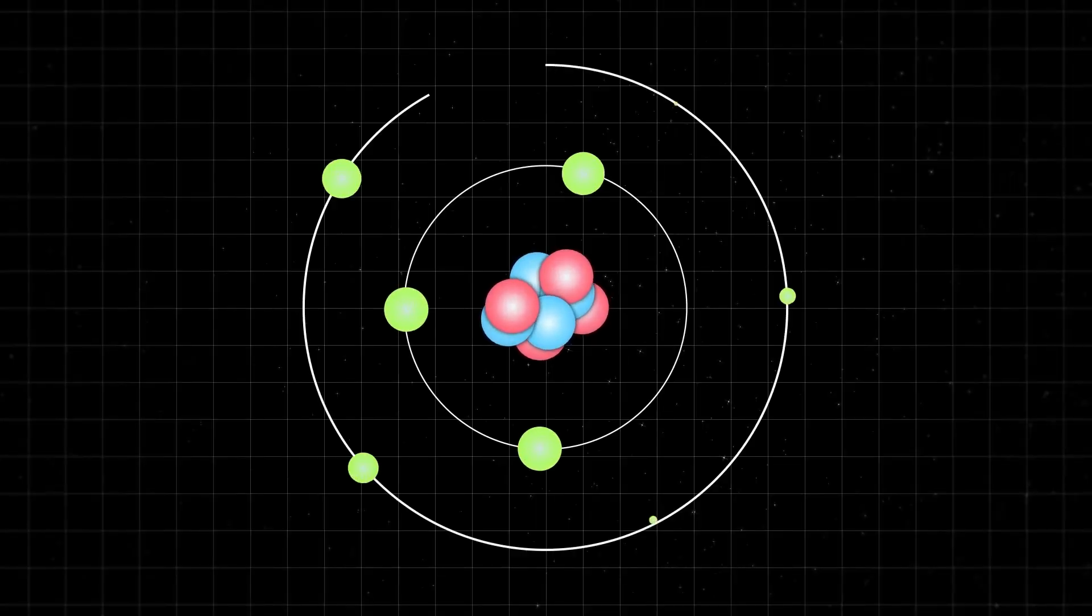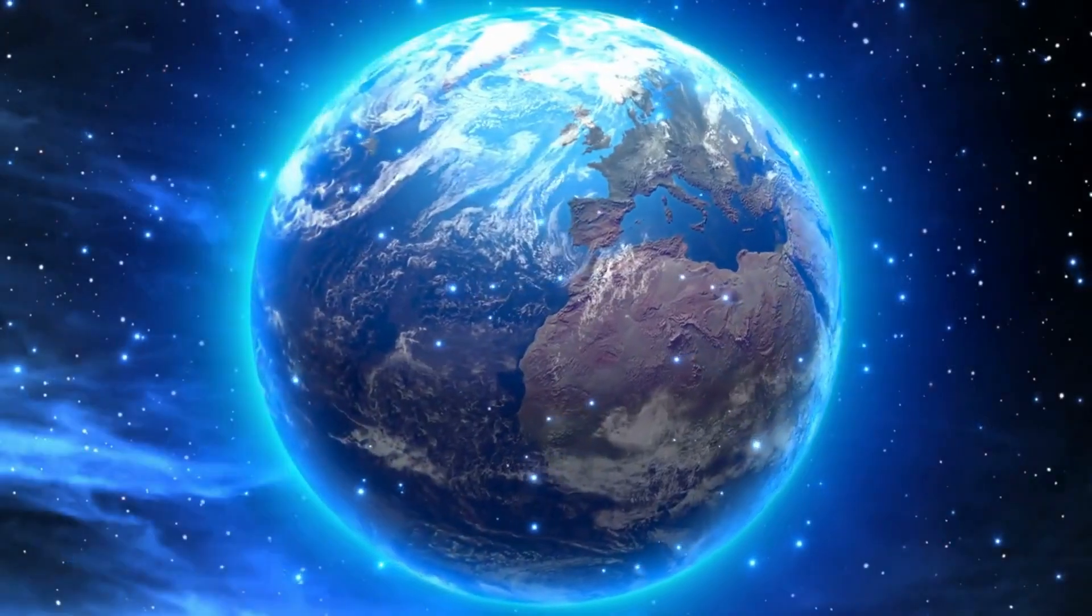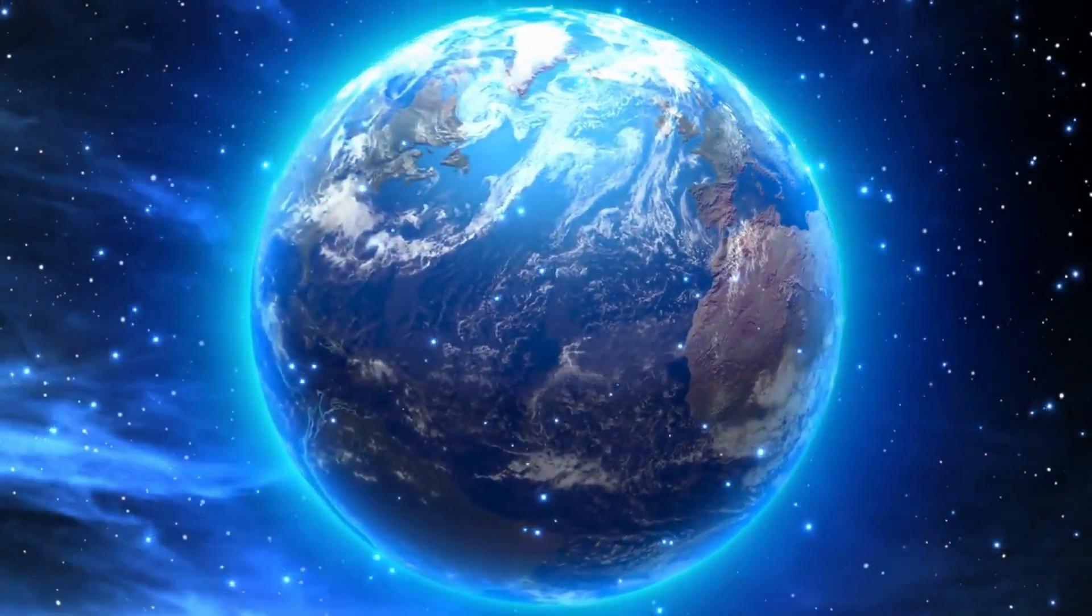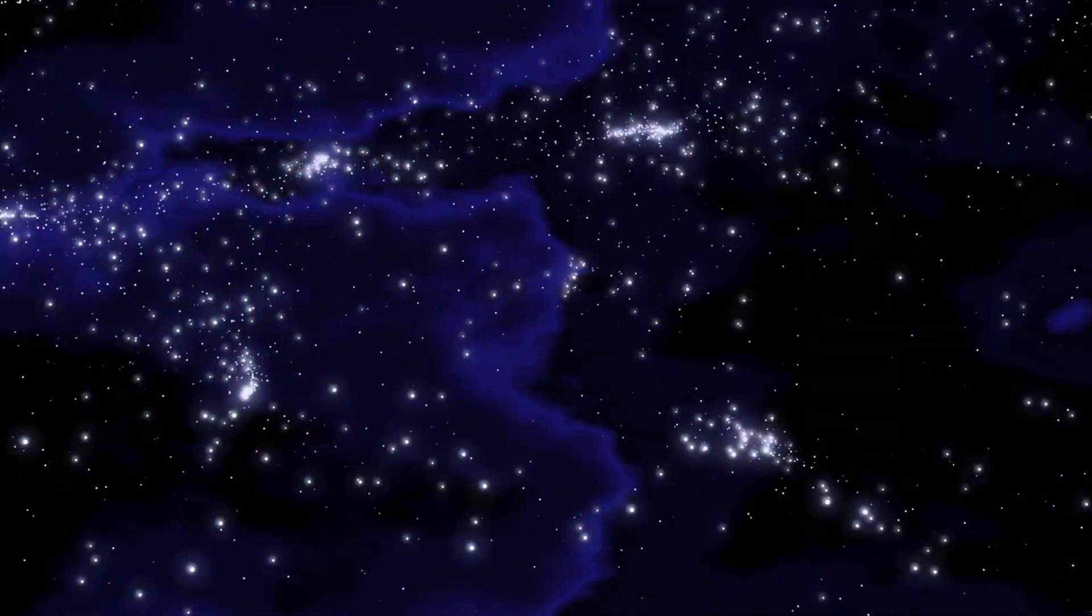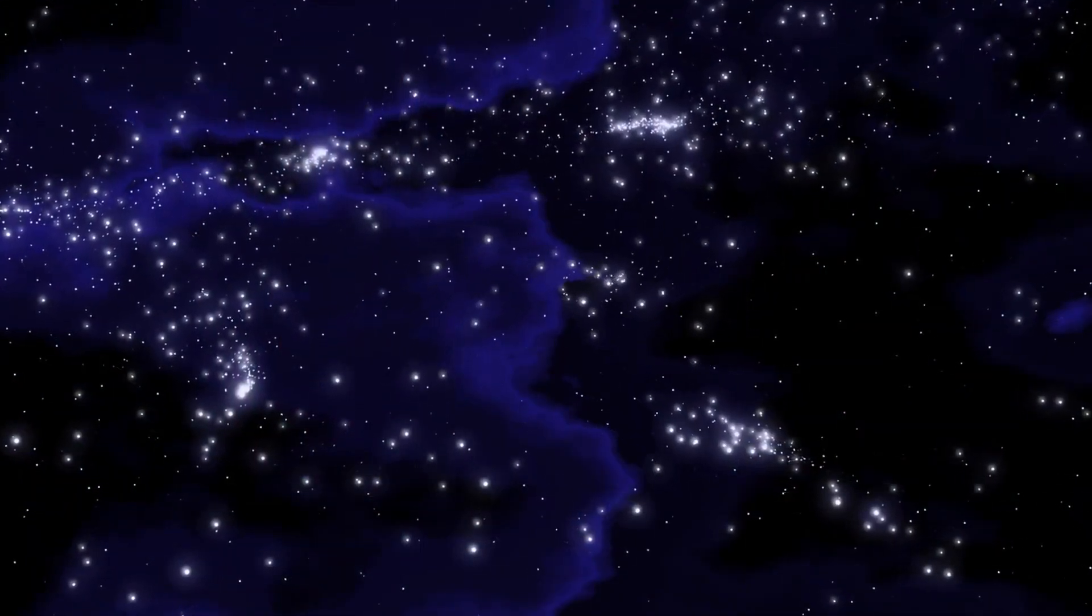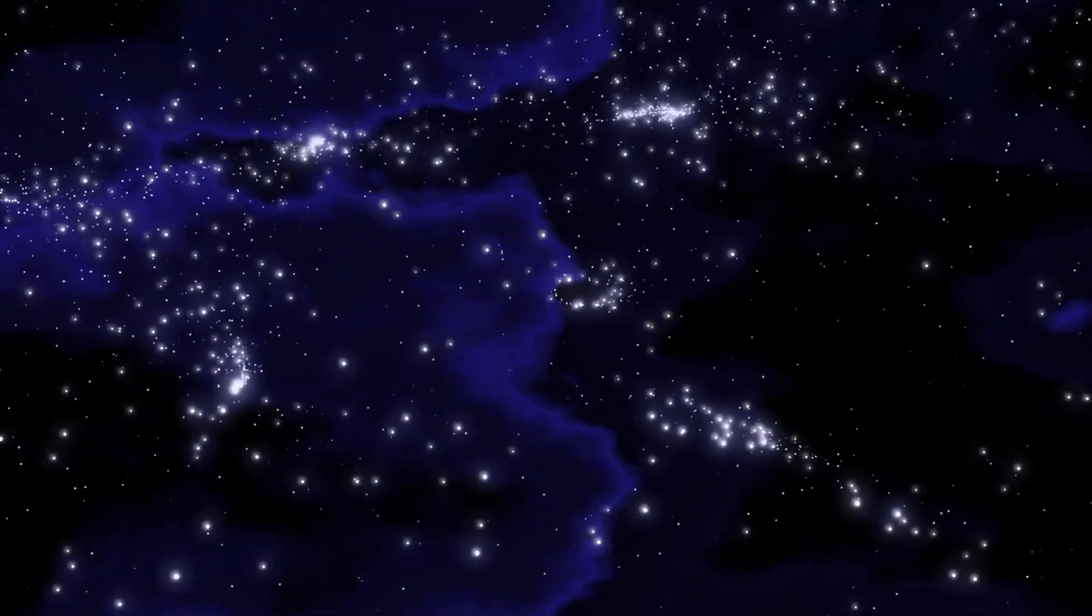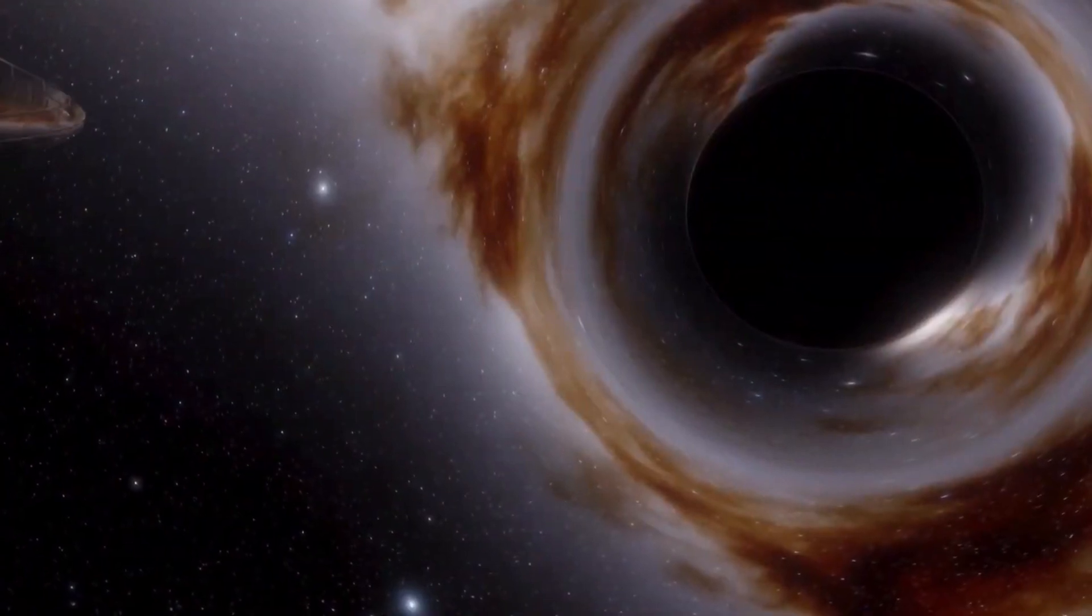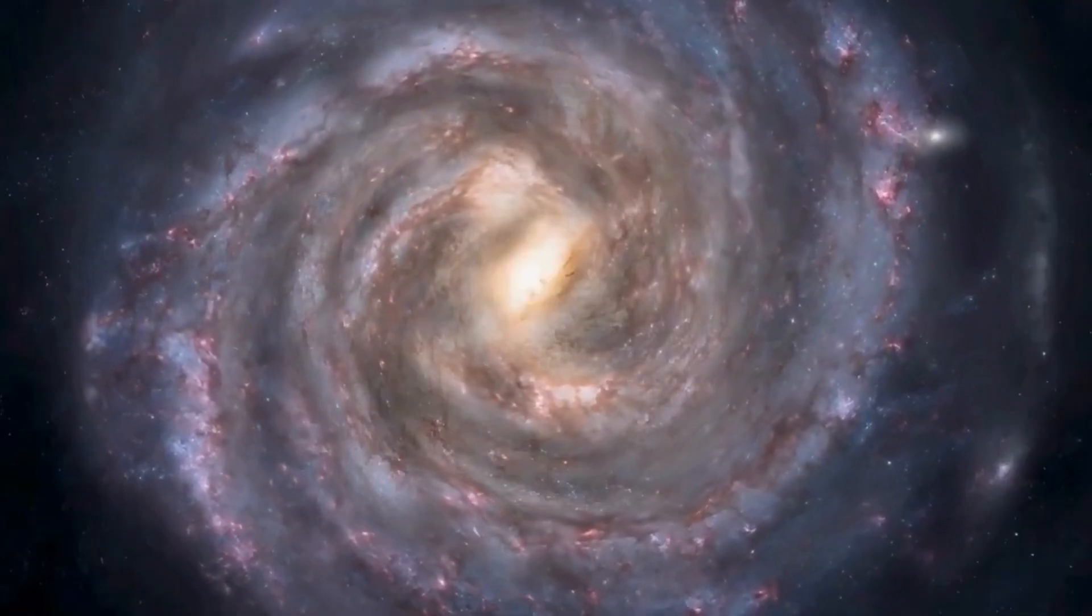But black holes are tricky. At first, they are astronomical objects, large stars. And then, they quickly shrink to much smaller, sometimes quantum sizes. For example, in order for the sun to become a black hole, it would have to be squeezed to the size of just about 1.8 miles, 2.9 kilometers, in radius.